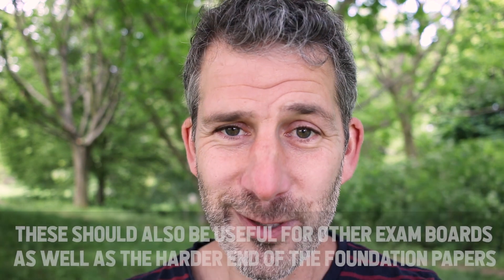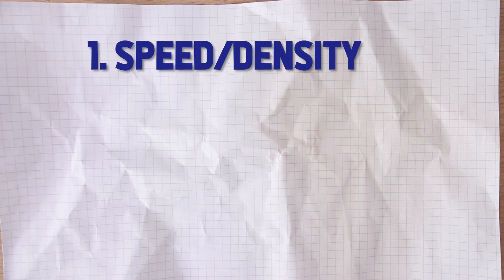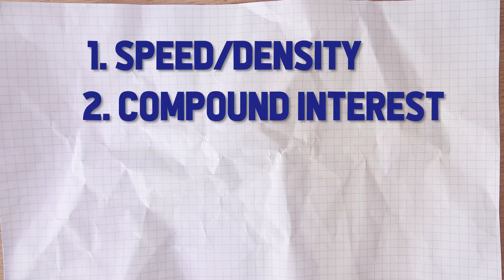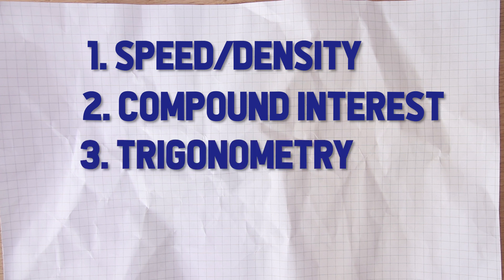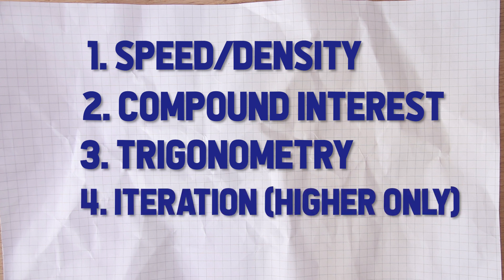So without further ado, here are the five topics that might come up. We've got those speed or density questions, compound interest, and then we've got trigonometry — you might refer to that as SOHCAHTOA — and then finally iteration. Iteration is the only one I might go through in a little bit of detail because I suspect you might not have seen that as much. You might not even have been taught it, but I think it's well worth having a look at.